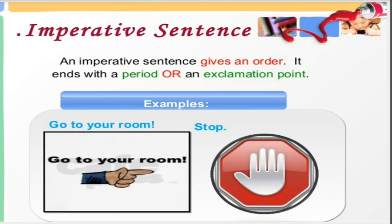The third type of sentence is the imperative sentence. An imperative sentence gives an order. Students, keep in mind that apart from giving an order, an imperative sentence can also be in the form of a request, a command, an advice, or sometimes a suggestion. It ends with a period or an exclamation mark. For example: 'Go to your room!' is an order; 'Please open your book' is a request; 'Open your book,' 'close the door,' or the doctor advising something — those are all imperative sentences.